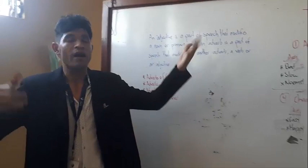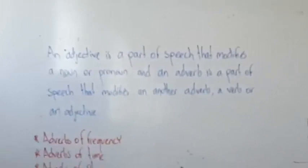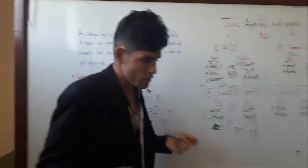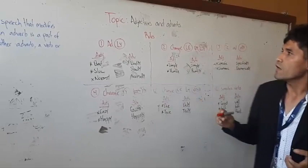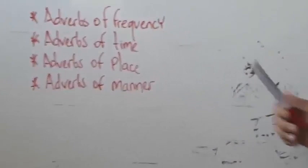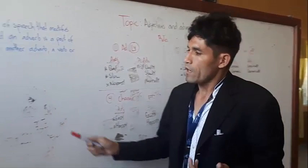First of all, we need to know what is an adjective and what is an adverb. An adjective is a part of speech that modifies a noun. We need to know as well that we have a lot of kinds of adverbs. For example, we have adverbs of frequency, adverbs of time, adverbs of place, and adverbs of manner. And today we are going to learn about adverbs of manner.